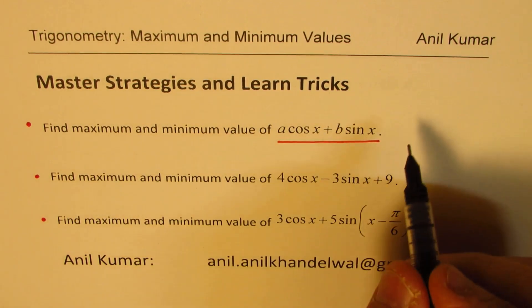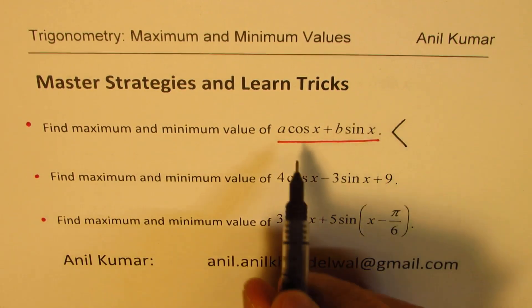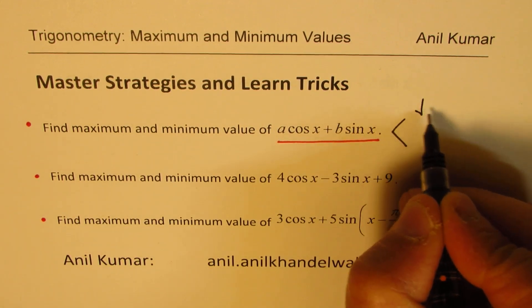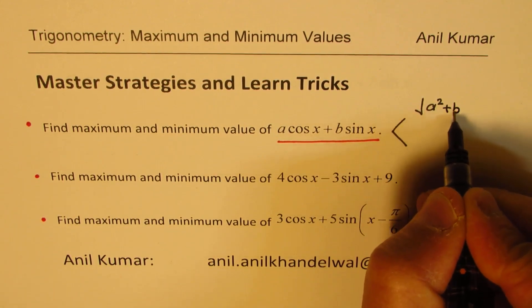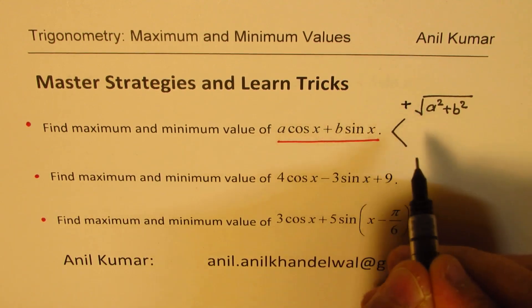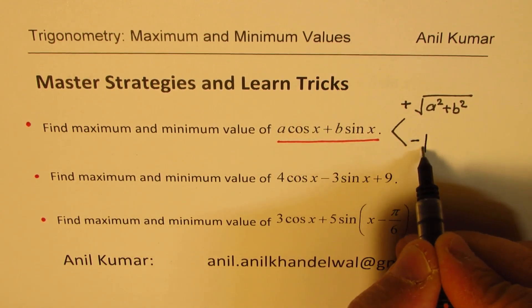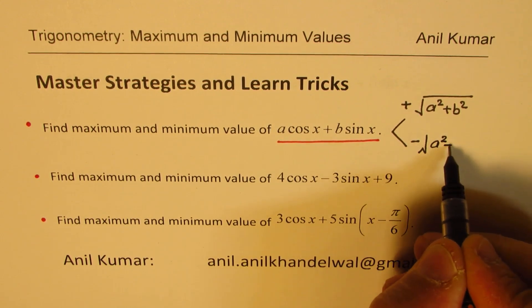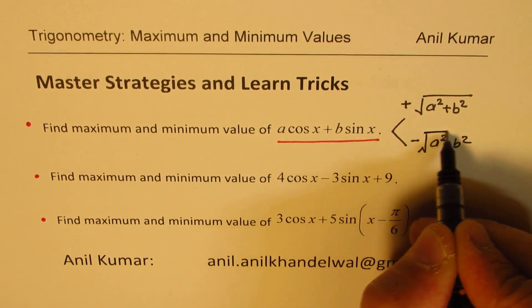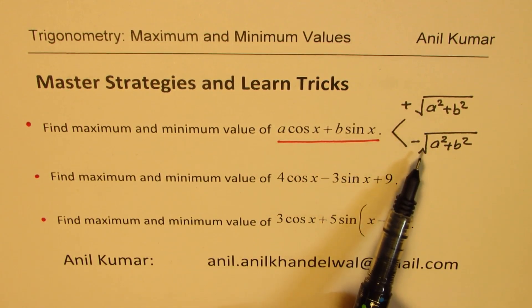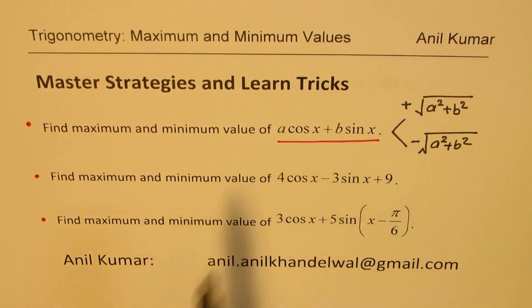As most of you know, the maximum and minimum for this function will be square root of A squared plus B squared. The maximum value carries a positive sign, and the minimum value will be minus square root of A squared plus B squared. So in a multiple choice test, you can immediately get to this solution — very simple. We'll derive this formula.